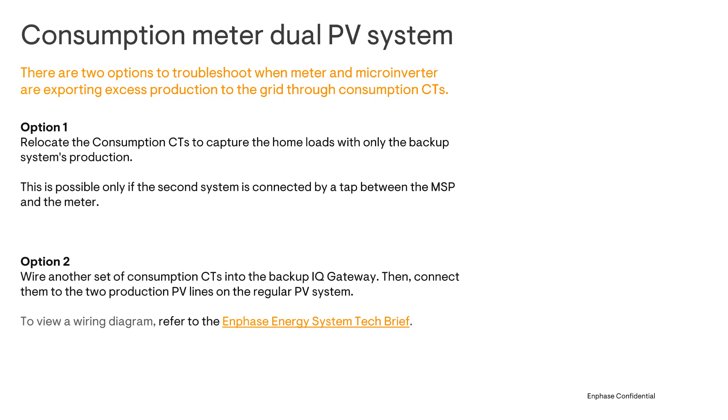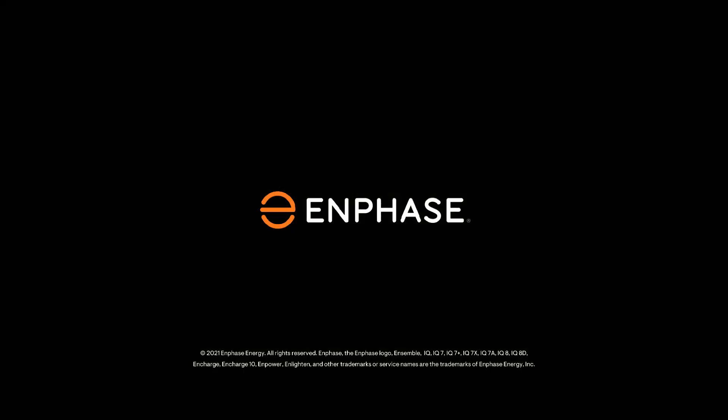If either of these options don't correct the issue, you'll want to contact customer support for additional troubleshooting steps. Now you have some basic troubleshooting steps to take if you've got a site that has two solar systems and shows negative consumption during the daytime when the production meter is aligned with microinverter values. Thanks again for watching another troubleshooting video from the Enphase training team.